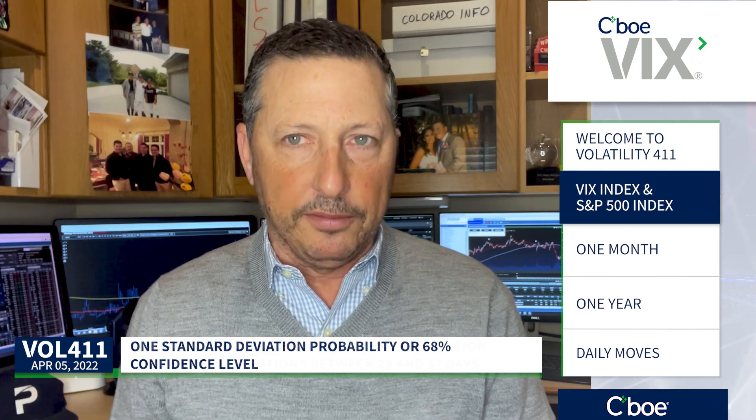This is Scott Bauer with Prosper Trading Academy and your SIBOVOL 411. The CBOE Volatility Index, or VIX, is a real-time market index representing the market's expectations for volatility and the expected range of movement in the S&P 500 Index over the coming 30 days. This has a one standard deviation probability, or a 68% confidence level. The VIX is calculated in real-time using live prices of S&P 500 options, which have expirations between 23 and 37 days.